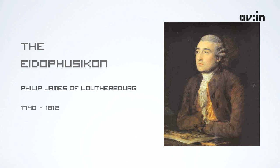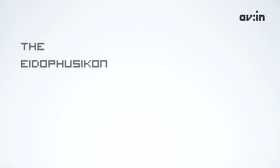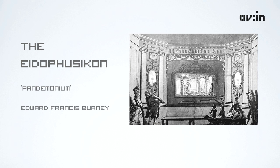The Eidophusikon, invented in 1781 by Philip James de Loutherbourg, was an attempt to perfect the illusion of representation of nature. The effects of movement added a lot of life to the landscape scenarios created for it, and for that reason it has been closely associated with the first form of movie making. The Eidophusikon inspired many other devices, and during the 19th century many of these devices evolved and started to become involved in performances, leading toward the cinematograph.